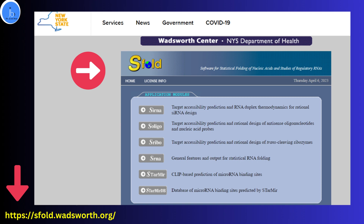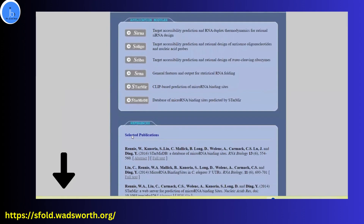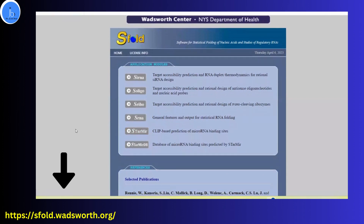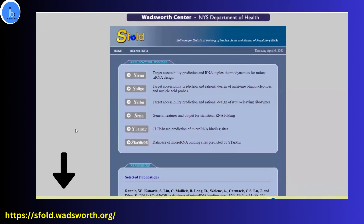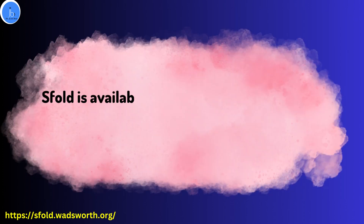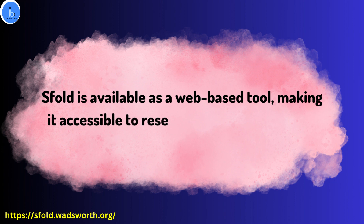S4 is a software tool that can predict the secondary structure of RNA molecules based on their sequences. S4 is available as a web-based tool, so if you are new to this platform, please use this link to come to this platform — I will be putting this in the description as well. S4 is accessible to researchers and students all over the world.